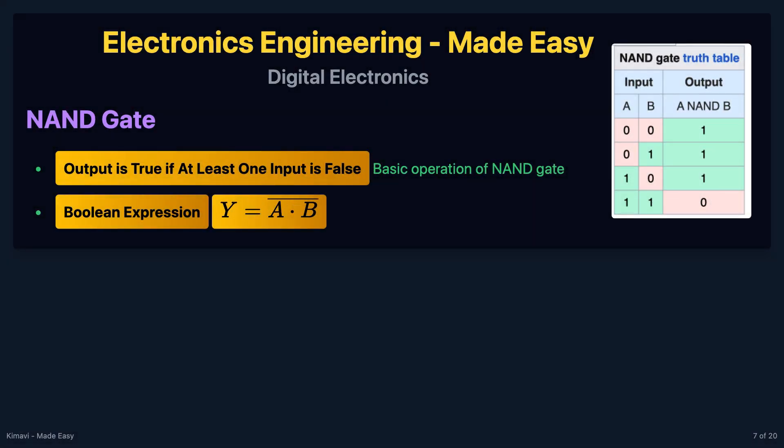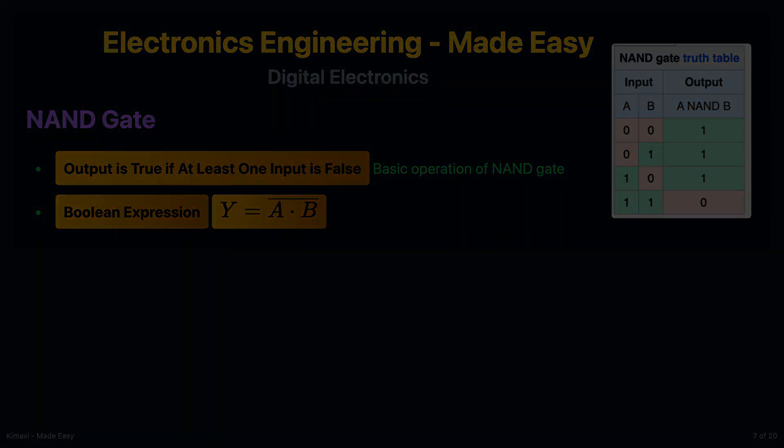The NAND gate outputs true if at least one input is false. The boolean expression for a NAND gate is y = $\overline{a \cdot b}$, where the overline represents the NOT operation applied to the AND operation.